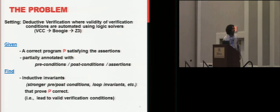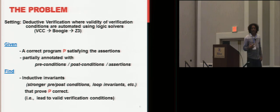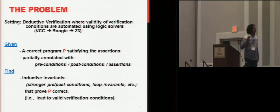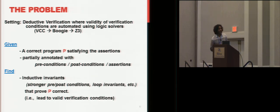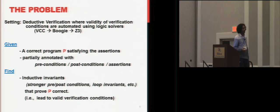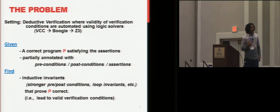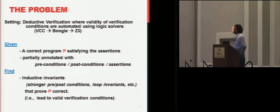So what's the problem? The way I look at it — and this is more widely applicable — is in a deductive verification setting where we are trying to prove a program that is written already correct. Think about the VCC, Boogie, Z3 kind of pipeline, where most of the verification conditions are checked to be valid using automated theorem provers, SMT solvers and so on.